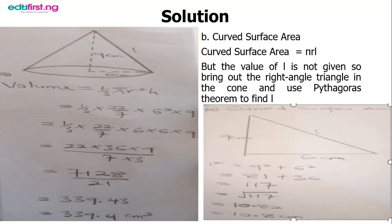In finding the slanted edge, Pythagoras theorem says that the hypotenuse squared equals the square of the sum of the two other sides. So l² = 9² + 6². 9² is 81, 6² is 36. When you add them, you have 117.